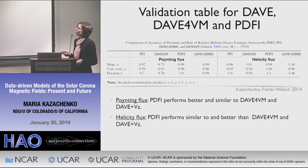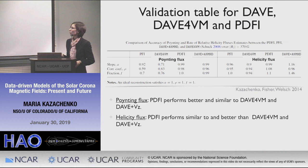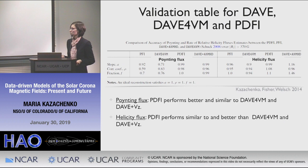This test has been used by many inversion methods. Here is a comparison of validation for DAVE, DAVE4VM, and PDFI to see how well they reproduce the Poynting flux and helicity flux — showing slope, correlation coefficient, and fractions. The ideal reconstruction should have ones everywhere. Without going into the numbers, the take-home message is that for Poynting flux, PDFI performs better or similar to DAVE4VM and DAVE+Vz. For helicity flux, PDFI performs similar to and better than DAVE4VM and DAVE+Vz. These two methods — DAVE4VM and PDFI — currently perform better than anything else.